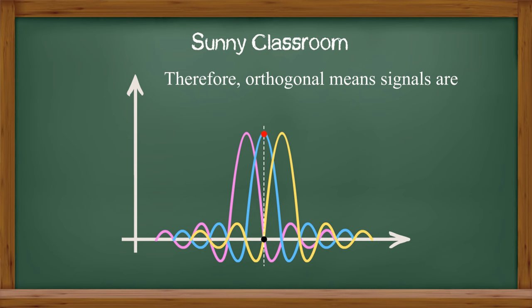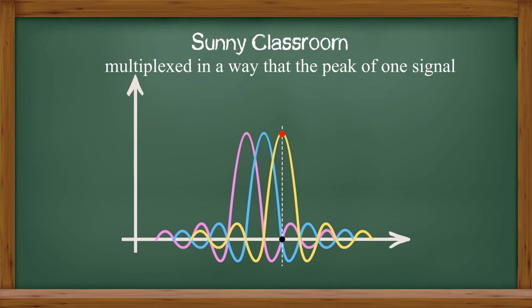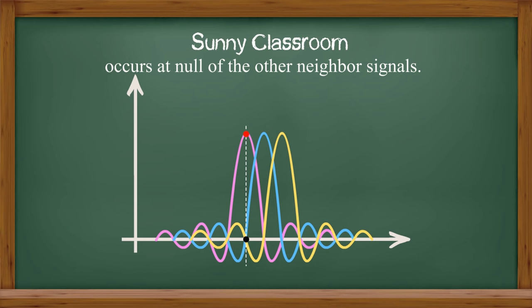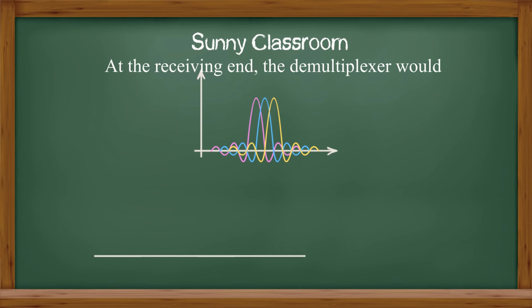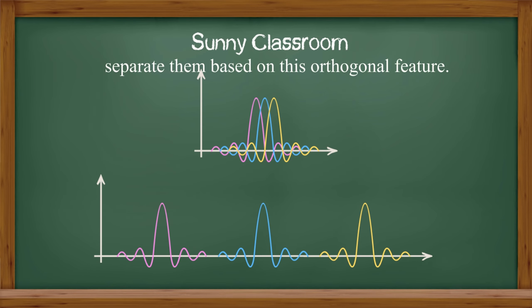Therefore, orthogonal means signals are multiplexed in a way that the peak of one signal occurs at the null of other neighbor signals. At the receiving end, the demultiplexer would separate them based on this orthogonal feature.